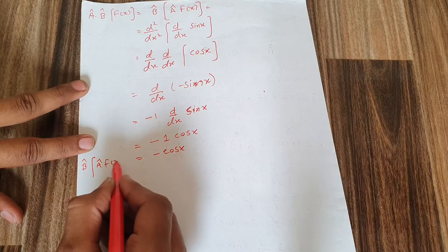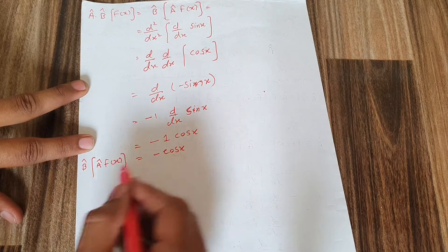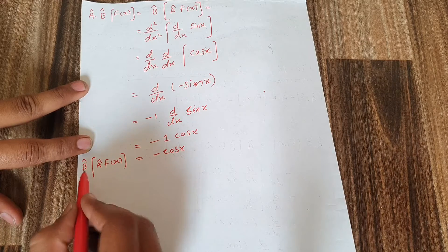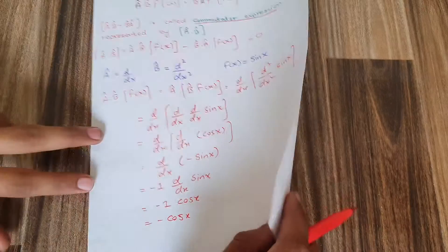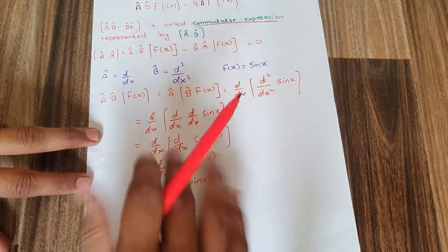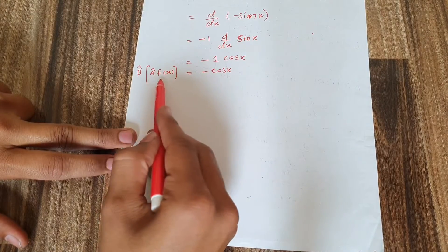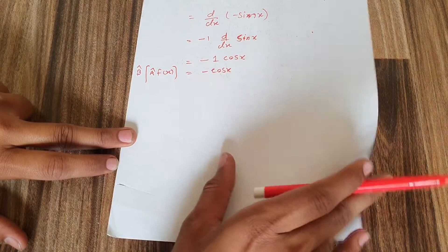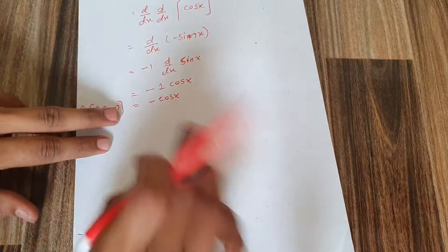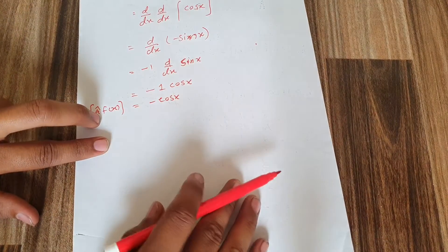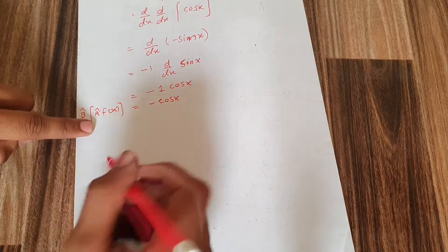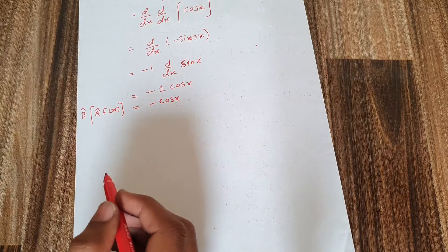This answer came when A was applied first and then B was applied later. When B was applied first and A was applied later, the answer was also minus cos(x). Since the answer in both cases is the same — minus cos(x) in both — we can say that A and B are commutative operators.